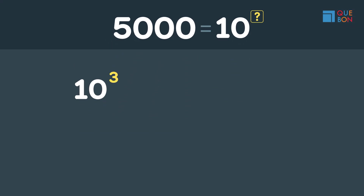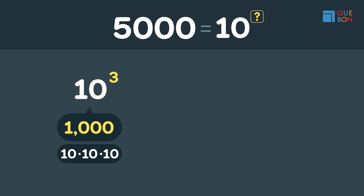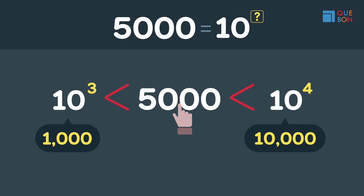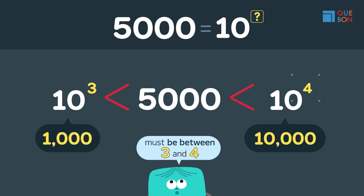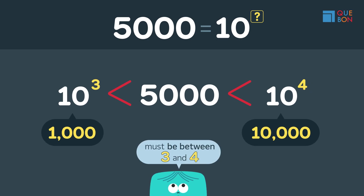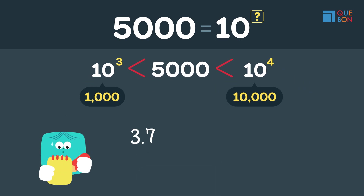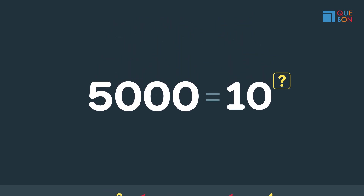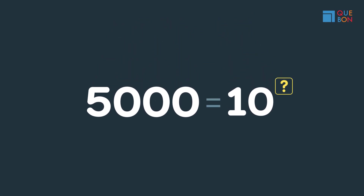Ten multiplied by itself three times is one thousand, and four times would be ten thousand. Because ten thousand is bigger than five thousand, the answer will be between three and four. But calculating this precisely by hand would take an incredibly long time — you wouldn't even be able to finish it.